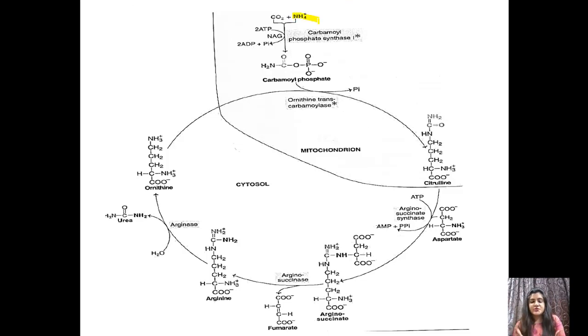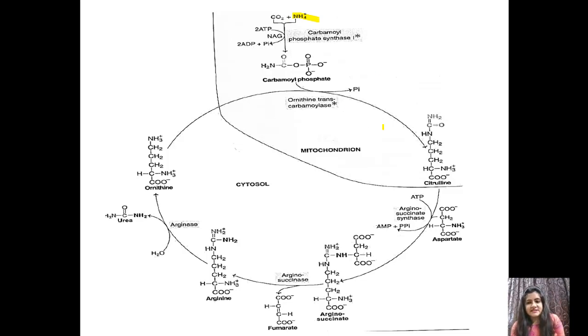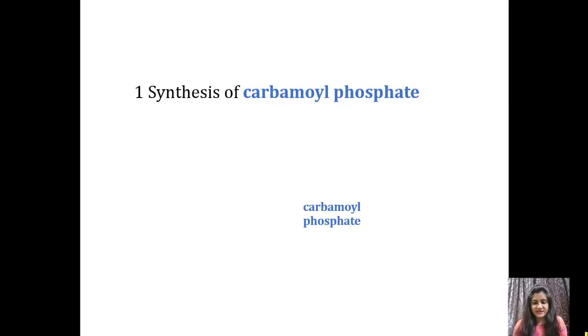Whatever ammonia is present, we use it in the urea cycle — it comes from the deamination reaction. Here, ammonia will combine with carbon dioxide to form carbamoyl phosphate. The enzyme required is carbamoyl phosphate synthetase. The first two steps — formation of carbamoyl phosphate and citrulline — occur in the mitochondria, while the next three steps occur in the cytosol.